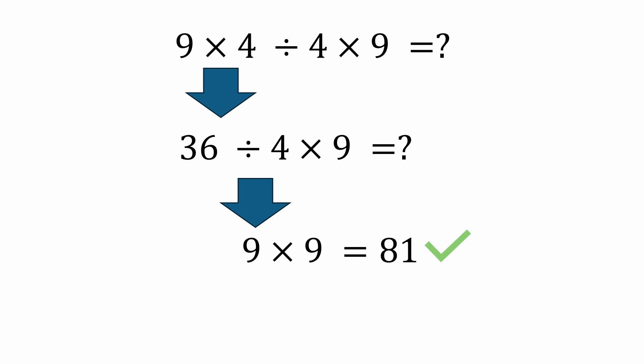Now, in order to get 1 using the standard order of operations convention, you would basically need to put parentheses around the 9 times 4 and parentheses around the 4 times 9 — and that's not being done here at all. You would need to put parentheses here and here, and then your answer would be 1, because you'd have 36 divided by 36.